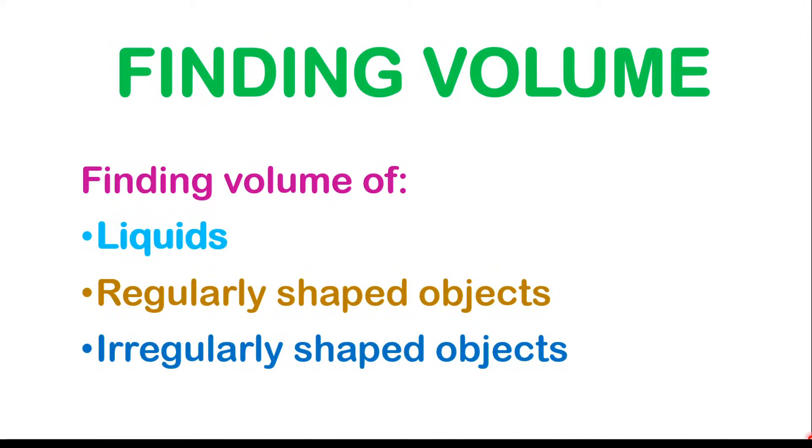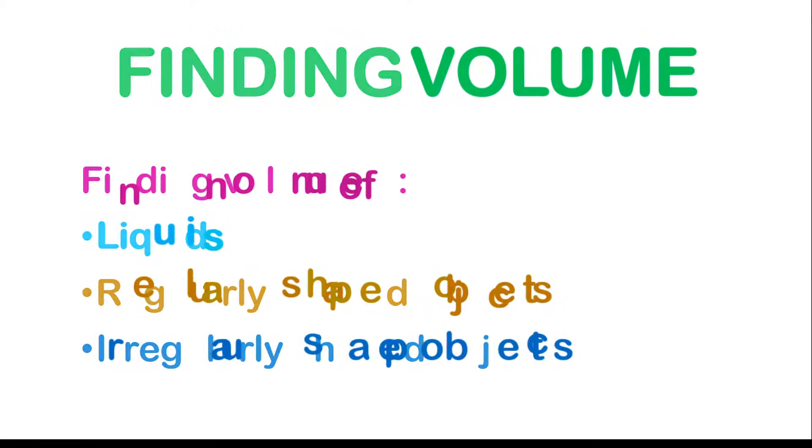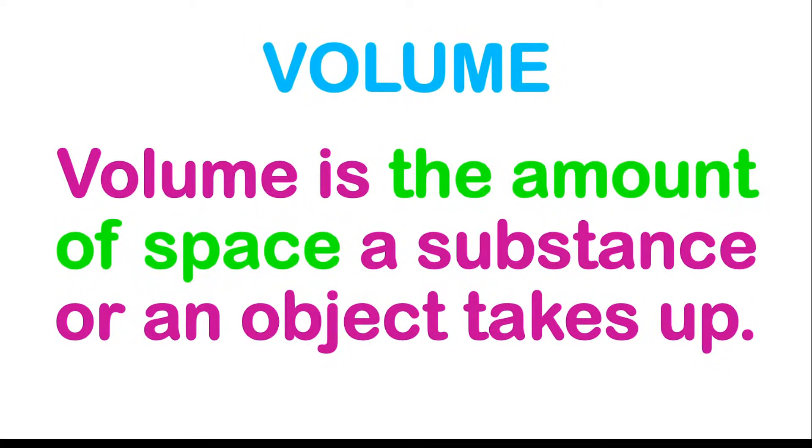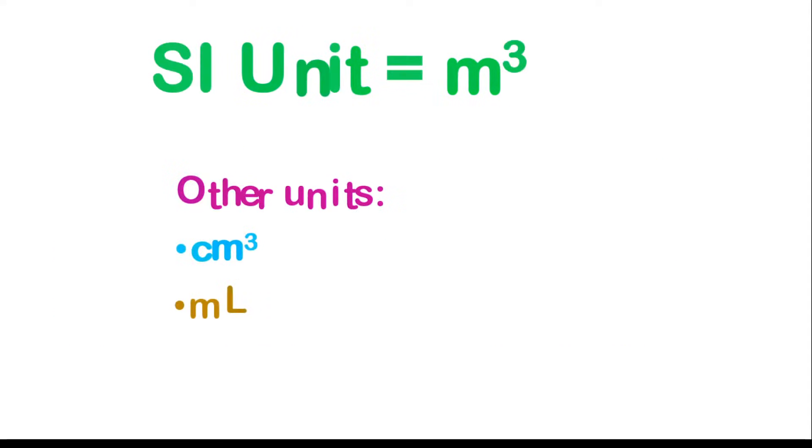The first thing to note is that volume is the amount of space a substance or an object takes up. To measure volume, we use the SI unit meters cubed. SI represents the international standards of unit. It's very important to note that volume is a three-dimensional measurement. It has three different lengths in it: meters by meters by meters, or length by length by length.